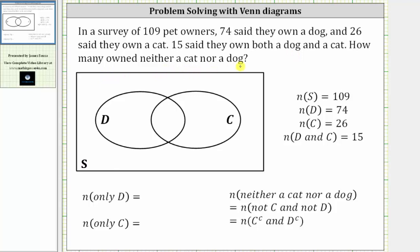Let's begin by recording the given information. Because the survey consists of 109 pet owners, we can say the number of elements in the sample set, or the cardinality of set S, is equal to 109, indicated using the notation N of S equals 109. Looking at the Venn diagram, we will let D equal the set of dog owners and C equal the set of cat owners.